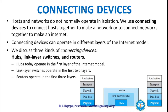Hosts and networks do not normally operate in isolation. We use connecting devices to connect hosts together to make a network, or to connect networks together to make an internet. Connecting devices can operate in different layers in the internet model. We discuss three kinds of connecting devices.